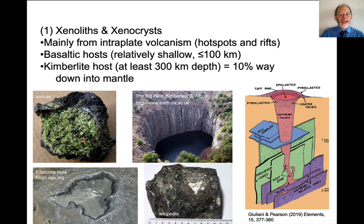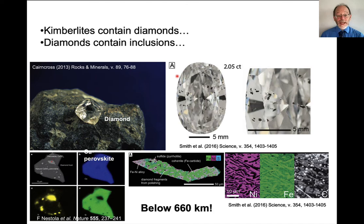Here's an example of a peridotite xenolith from the upper mantle, from Kilburn Hole. This is an air photo of Kilburn Hole. Here is a kimberlite locality in South Africa, and here's an image of a kimberlite with these big xenocrysts in it, and here's what the structure of a typical kimberlite looks like. This gets us down from 100 kilometers to about 300 kilometers depth, which is about 10% of the way down into the mantle.